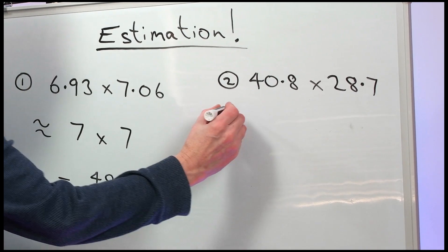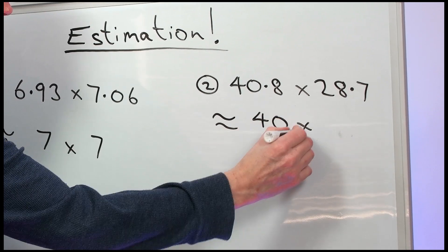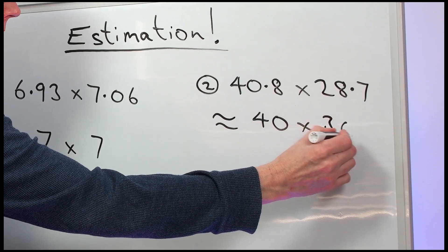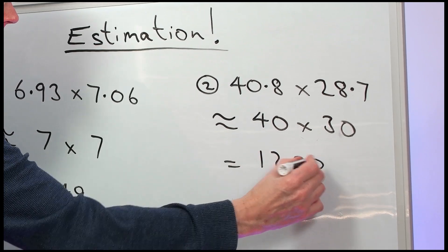Now, number 2. That's approximately 40 times 30. 3 fours are 12. So that's 1,200.